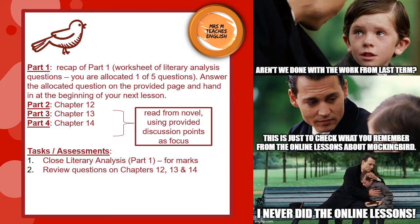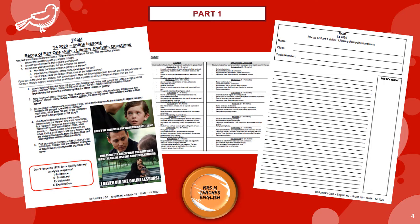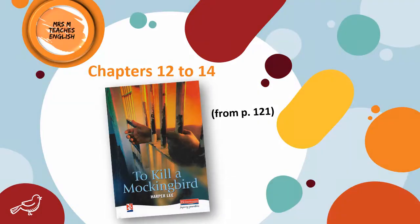This lesson is divided into four parts. My students have to complete a written recap of part one of the novel, chapters 1 to 11. This is followed by the reading of chapters 12 to 14. The written assessment requires you to provide a close textual analysis in response to one of five questions, written on the provided page and marked using the rubric included on the task sheet. You are being trained to cite textual evidence that most strongly supports an analysis of what the text says explicitly, as well as inferences drawn from the text. We're going to read chapters 12 to 14 starting on page 121 in the Heinemann edition.